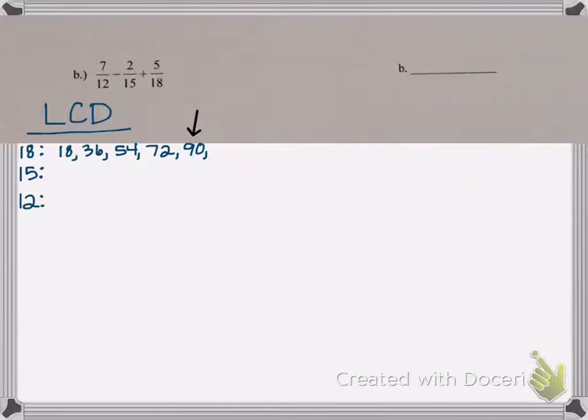15 ends in a 5. That means that all the multiples of 15 are going to end in 0 or 5. So my least common multiple of all three of these numbers has to end in a 0 or 5 in order for 15 to work. Now I know 90 doesn't work because 12 does not go evenly into 90. 90 will not be in the list of multiples of 12. But I'm going to keep going and see what the next number is that I get that ends in a 0.